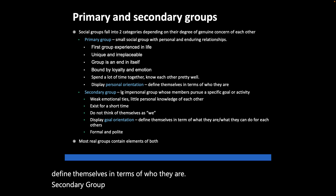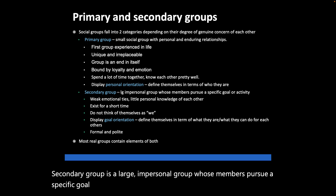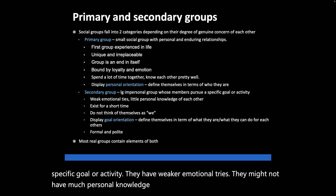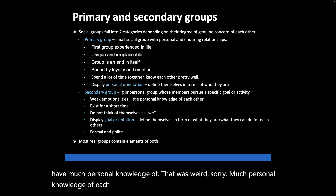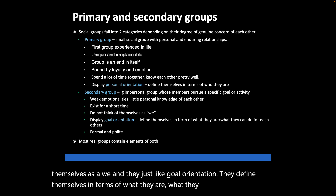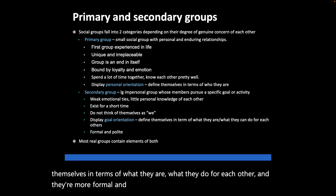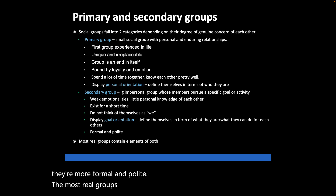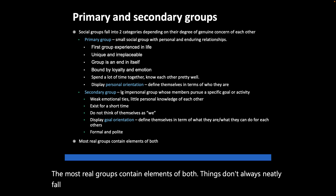A secondary group is a large, impersonal group whose members pursue a specific goal or activity. They have weaker emotional ties, might not have much personal knowledge of each other, and may exist for only a short time. They don't think of themselves as a 'we,' display goal orientation — defining themselves by what they do for each other — and are more formal and polite. Most real groups contain elements of both, and things don't always fall neatly into only one category.